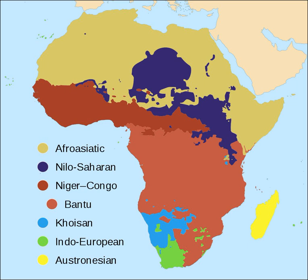Besides the former colonial languages of English, French, Portuguese and Spanish, the following languages are official at the national level in Africa. Afro-Asiatic: Arabic in Comoros, Chad, Djibouti, Egypt, Eritrea, Mauritania, Somalia, Sudan, Tunisia, Algeria, Libya, Morocco and Zanzibar, Tanzania. Berber in Morocco and Algeria. Amharic in Ethiopia. Somali in Somalia. Tigrinya in Eritrea and Ethiopia.